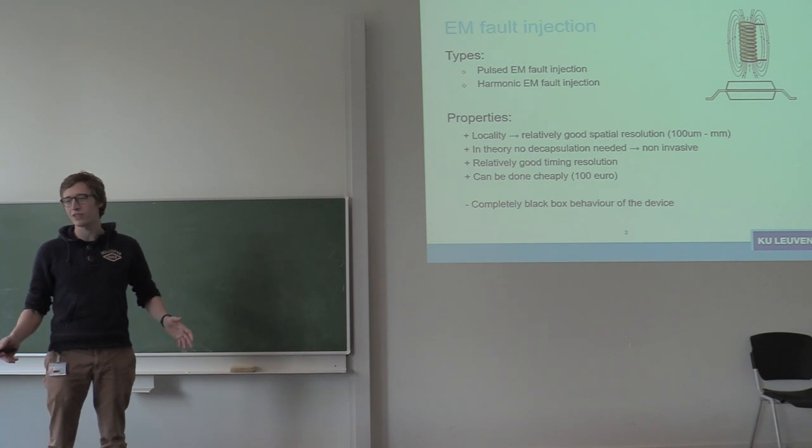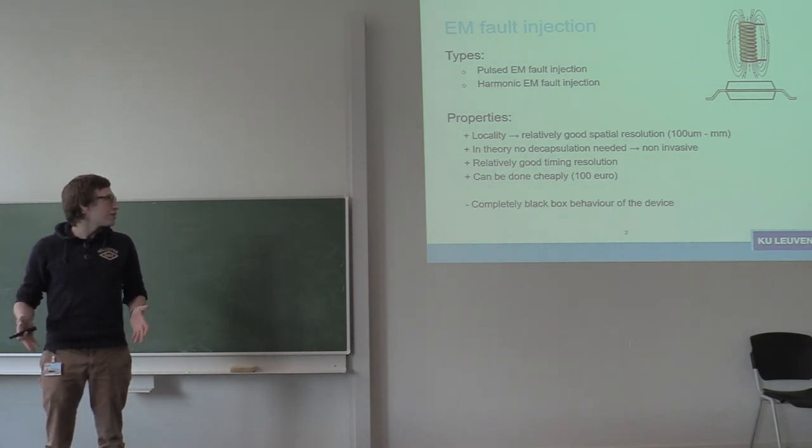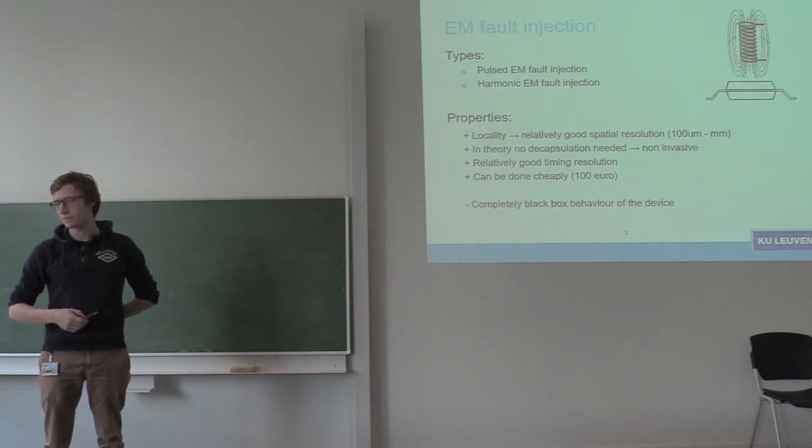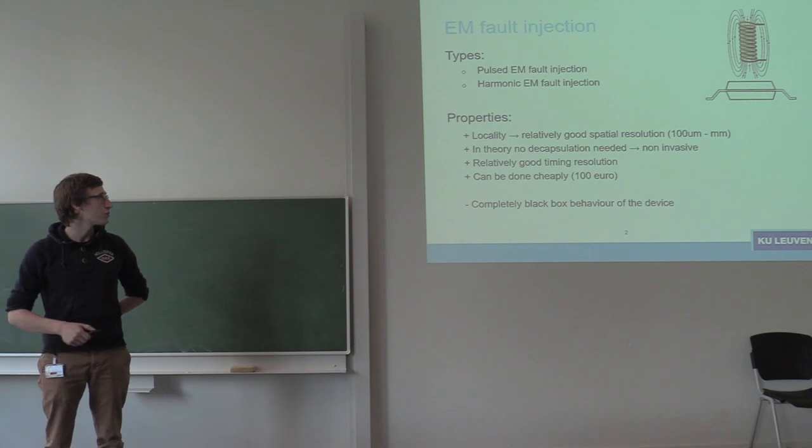One is pulsed. So with pulsed injection, the name says it by itself - you just inject a single pulse into your target IC. Harmonic EM fault injection, on the other hand, you inject a continuous wave into your target and you hope that at some point a fault will occur.